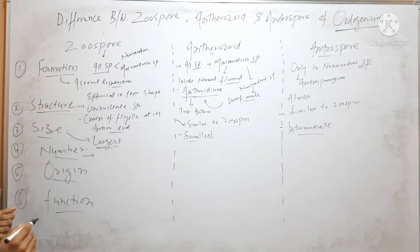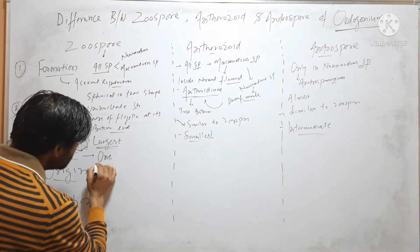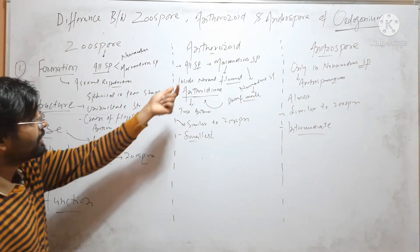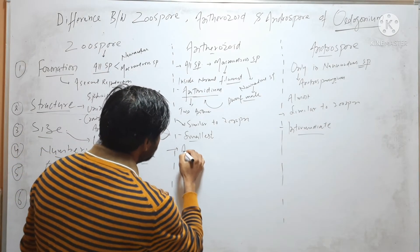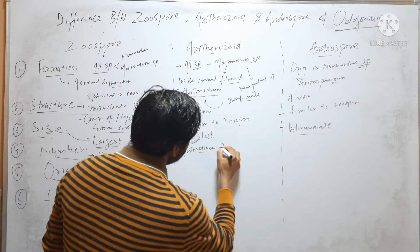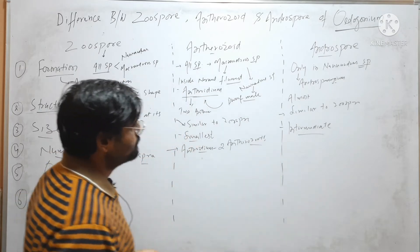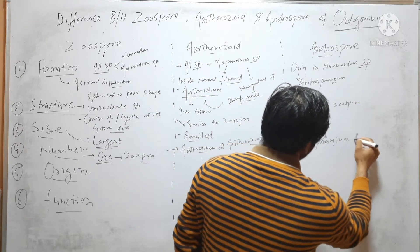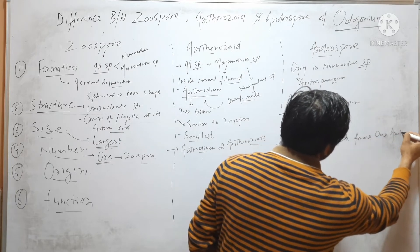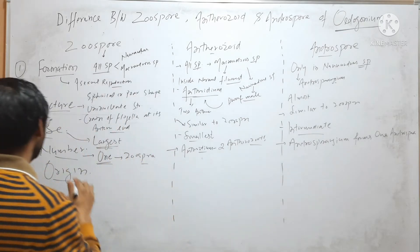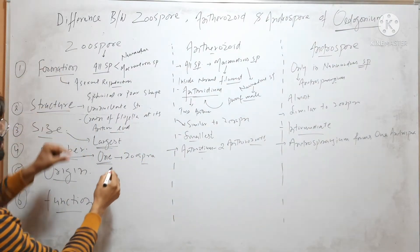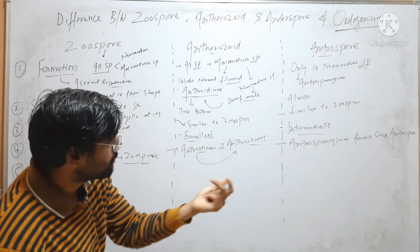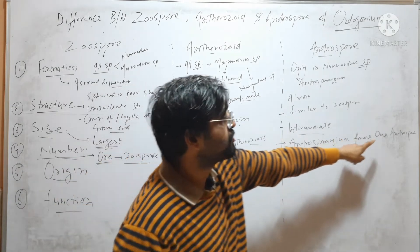Regarding number: each Zoosporangium forms one Zoospore. Each Antheridium forms two Antherozoids. And Androsporangium produces only one Androspore.